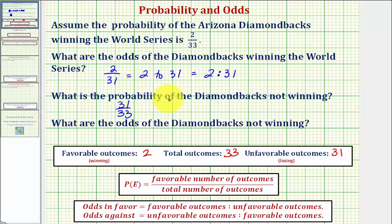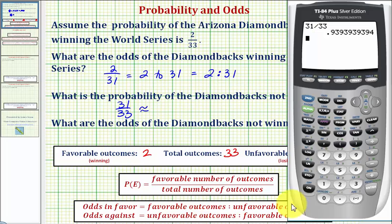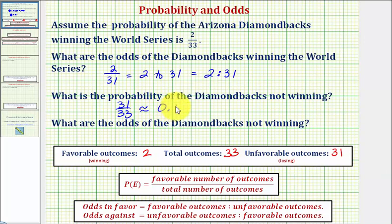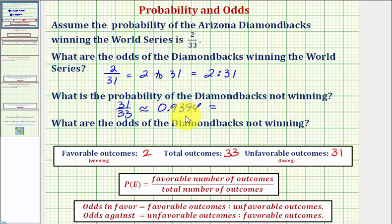Let's go ahead and express this as a decimal and a percentage. To convert to a decimal, we divide: 31 divided by 33. If we round to four decimal places, this would be approximately 0.9394. To convert this to a percentage, we move the decimal point to the right two places and add a percent sign, so this would be 93.94 percent.